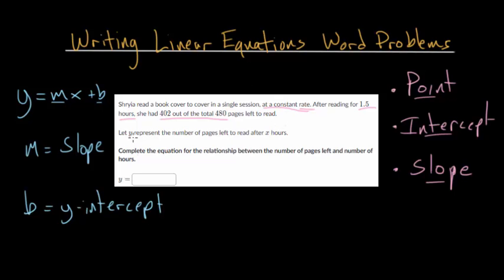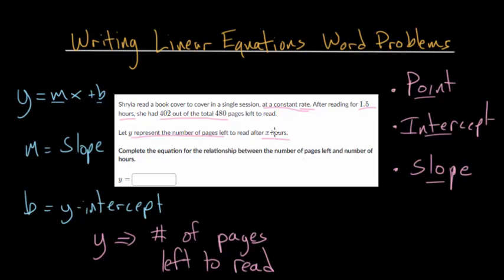And we're going to let y represent the number of pages left to read after x hours. So my first advice, kind of the strategy for these, is to define your variables. So we know that, in this case, y is just going to be the number of pages left. And we also know x, since that's our time, in hours. So I'll just write x as time, and we're looking at it in units of hours.